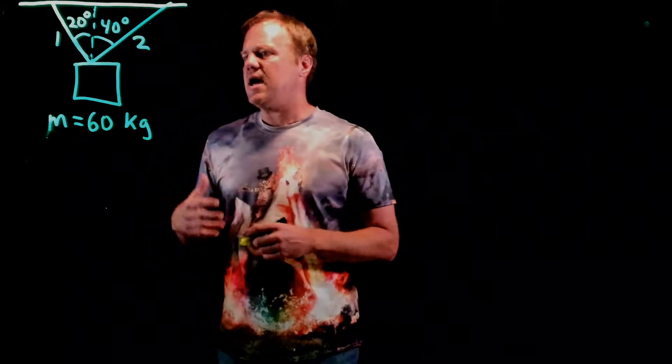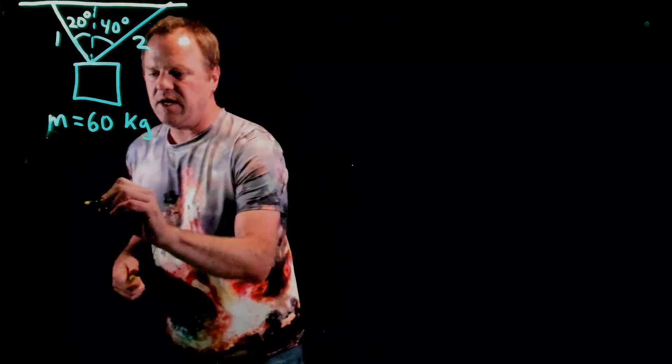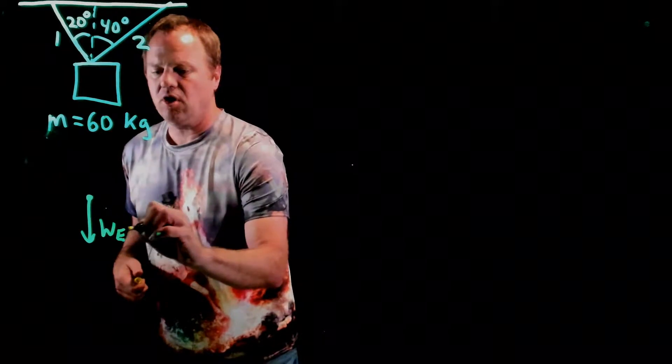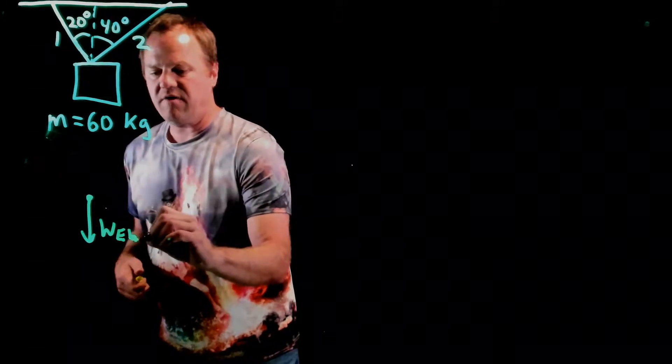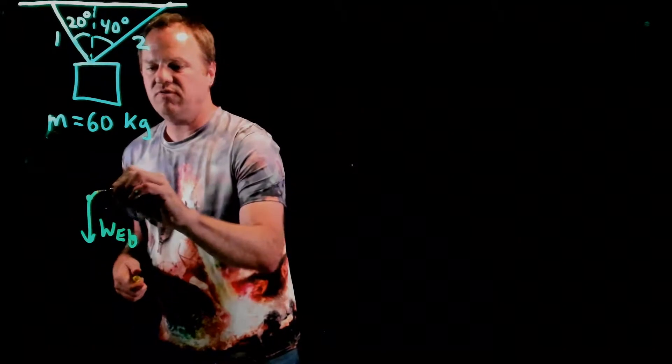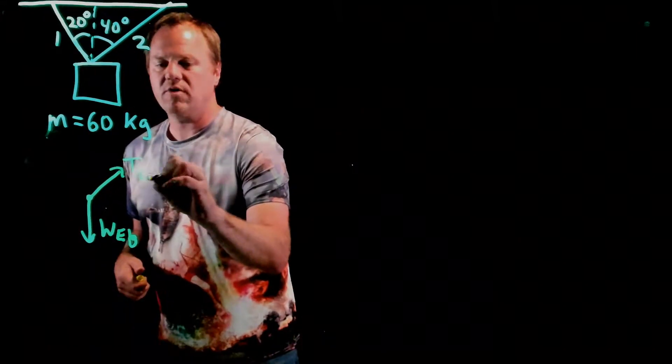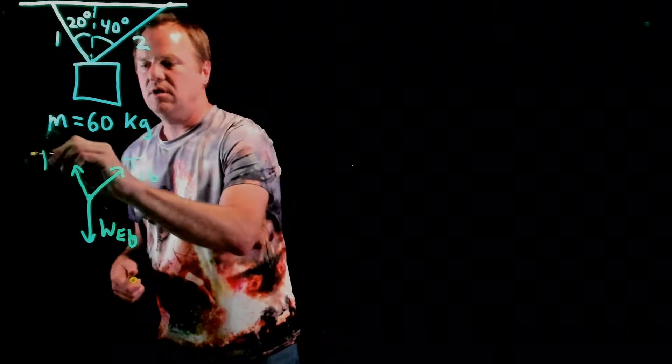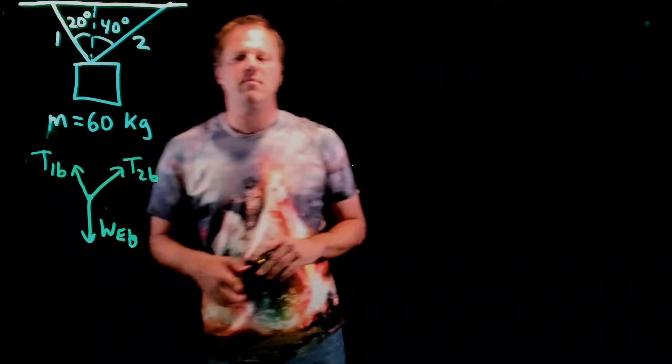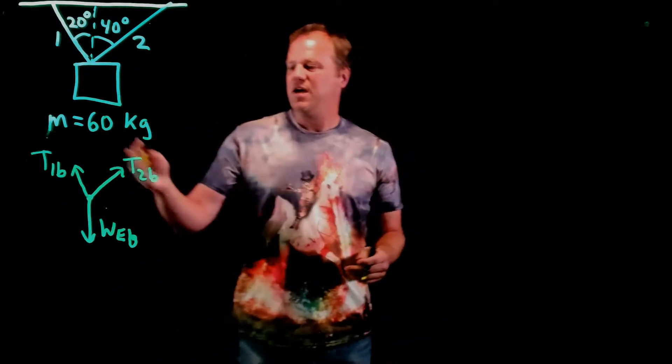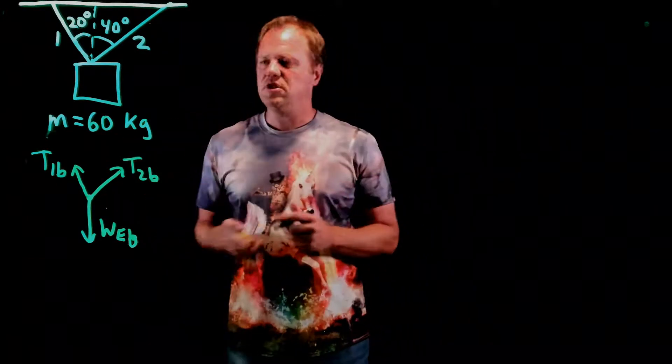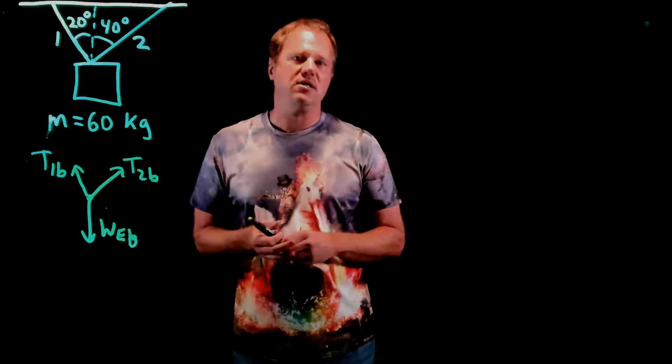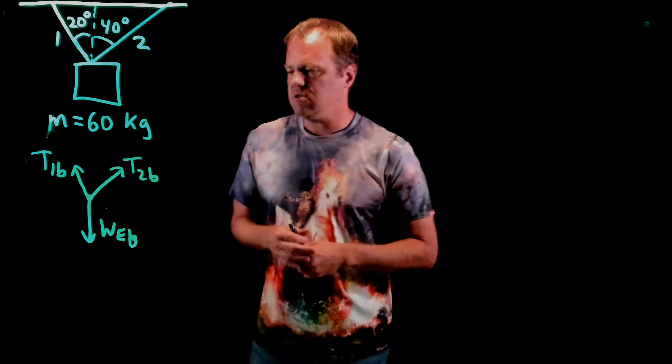So I would start with a free body diagram as usual with any Newton's Laws situation. We have a weight force due to the earth on the block. We have a tension force T2 up to the right and then we have a second tension force up to the left, T1, on the block. Now you might have better intuition about how long these arrows should be drawn, but since we don't have the data, the sketch might not be exactly accurate in terms of the magnitudes of these vectors.